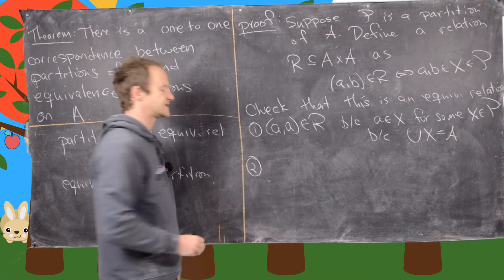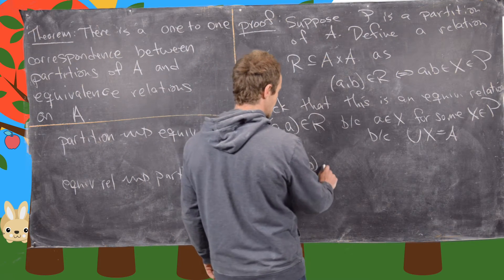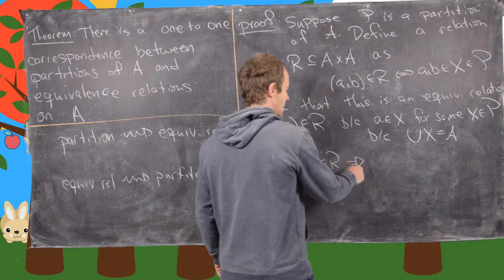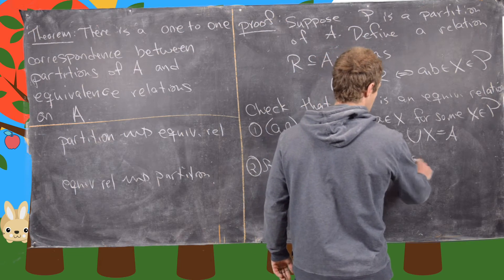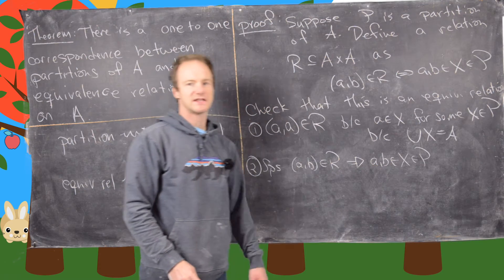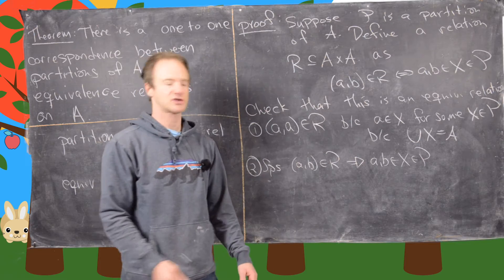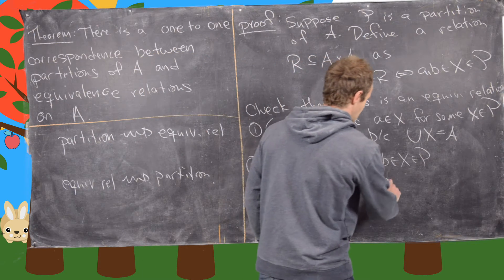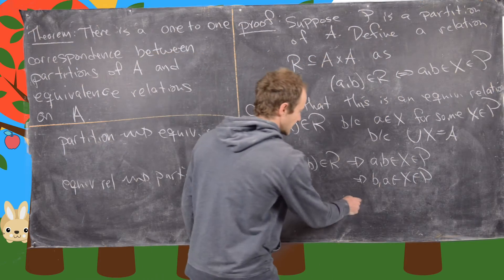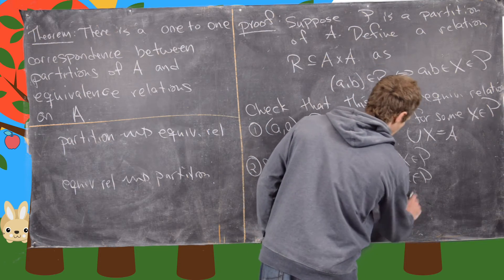For symmetry, suppose (a, b) is in R. That means a and b are in the same portion of the partition. But we can just write this in the other order with the same meaning — a and b being in the same portion of the partition is the same as b and a being in the same portion, which means (b, a) is in our relation.